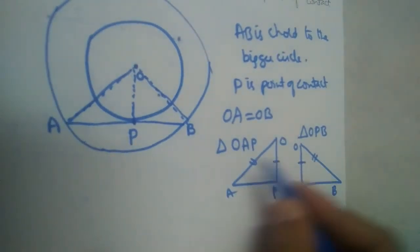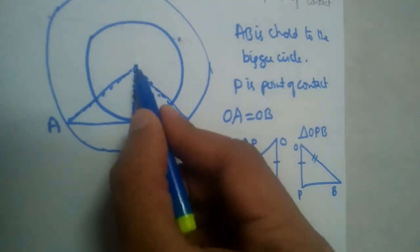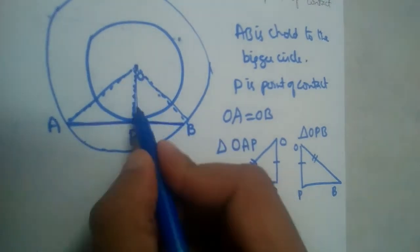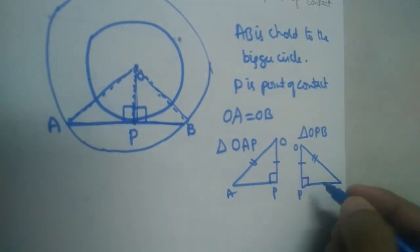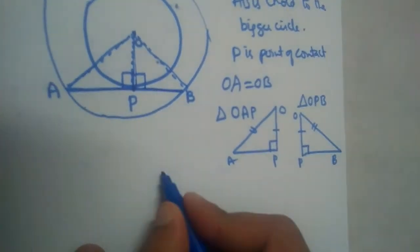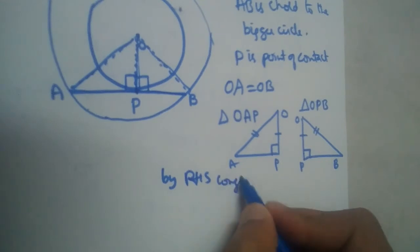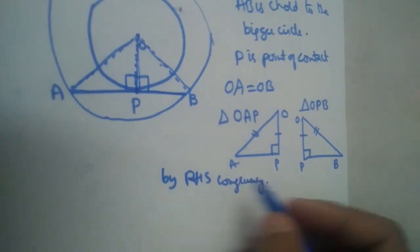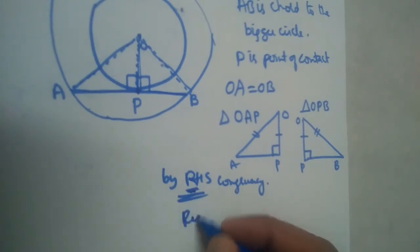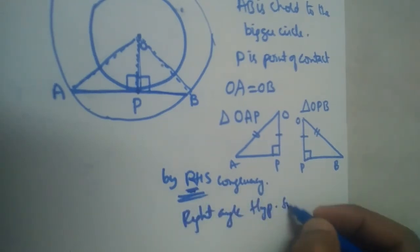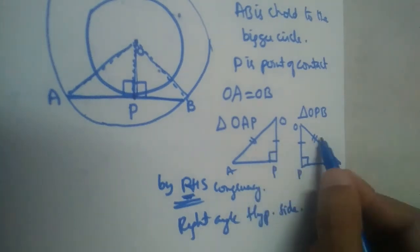OP is a common side. This is the radius and this is the tangent. We have learned that radius and tangent are perpendicular to each other, so angle P is 90 degrees. By RHS congruency — what is RHS congruency?